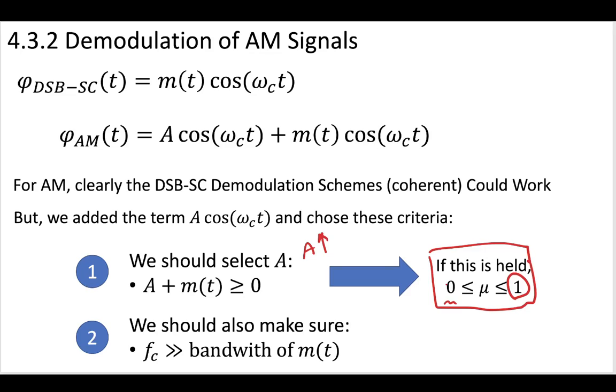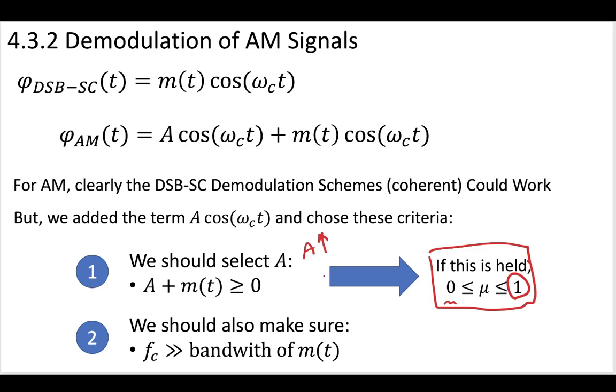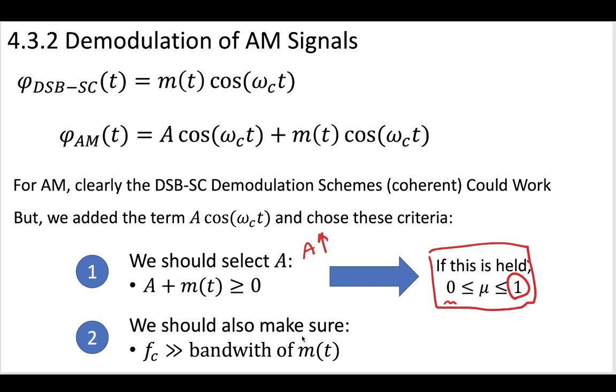Our modulation index will be between zero and one. So let's consider two ways of recovering our original message, knowing that we've completed our amplitude modulation by selecting these two criteria properly. So let's make sure that we're holding this index correct and that we've also selected a large bandwidth. And once we've done that, let's see two different devices that can be used to perform the demodulation.